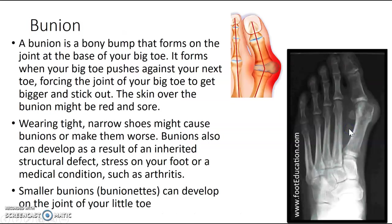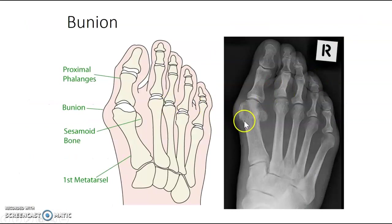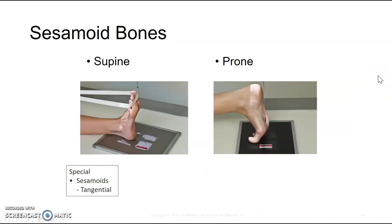Toes are hard, especially on elderly people. They may specify they're looking for a bunion — a bony bump that forms on the joint at the base of the big toe, which can be very painful. For sesamoid bones, though I've never done these as a technologist, if you're working at a different site you may get an order for this. It's a tangential view.